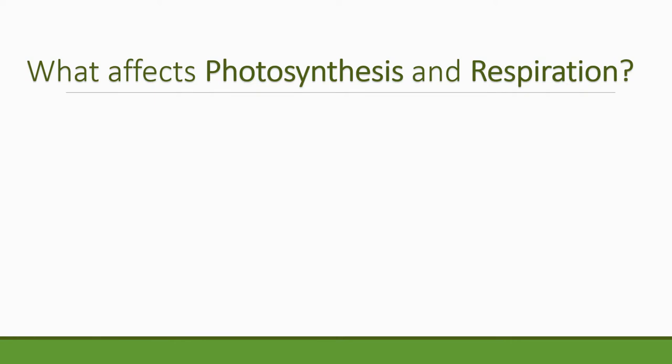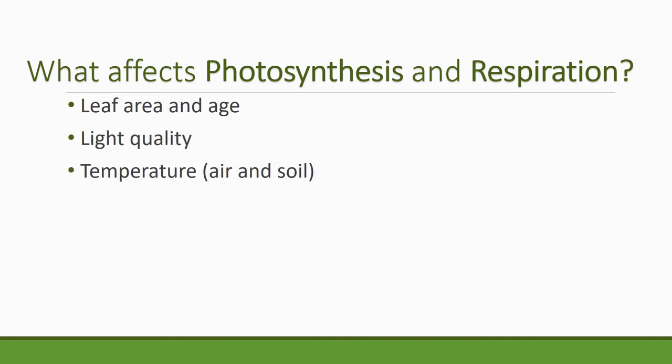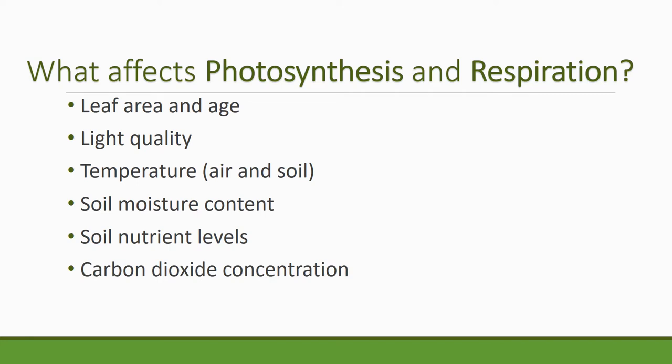So what affects photosynthesis and respiration? First of all, how old is that leaf? Young leaves are more photosynthetically active. Also, how much leaf area is there? Those are both characteristics that determine how much photosynthesis occurs, how effective that plant is at photosynthesis, and how much it respires. Light quality can affect photosynthesis. The temperature of the air and the soil affect the rate of photosynthesis. Soil moisture content also affects photosynthesis. Soil nutrient levels, carbon dioxide levels, and then efficiency of photosynthetic transport — some plants are just better at different ages at transporting photosynthates throughout their system.